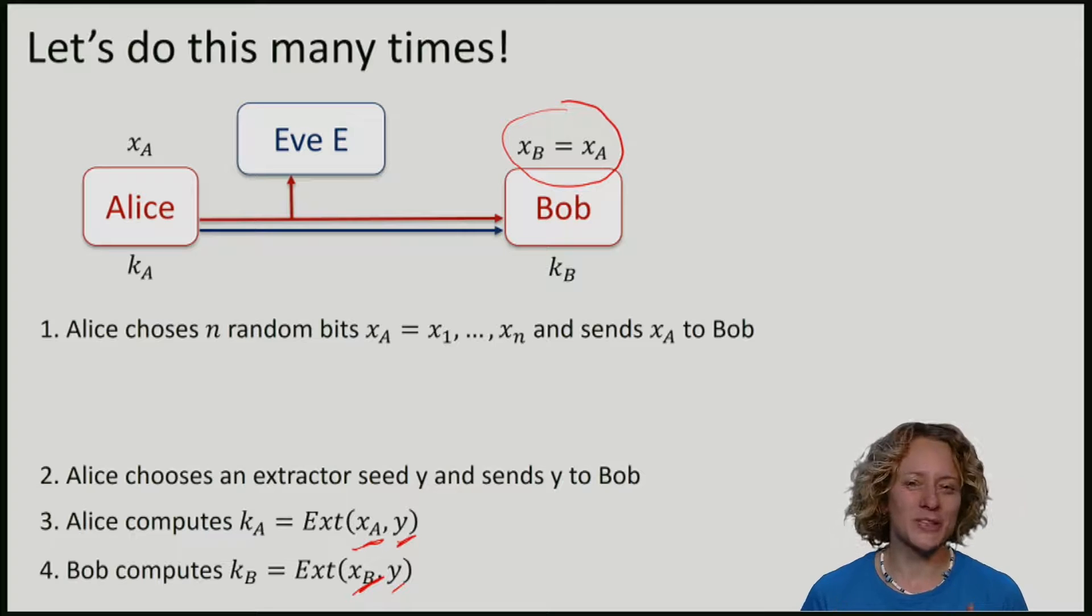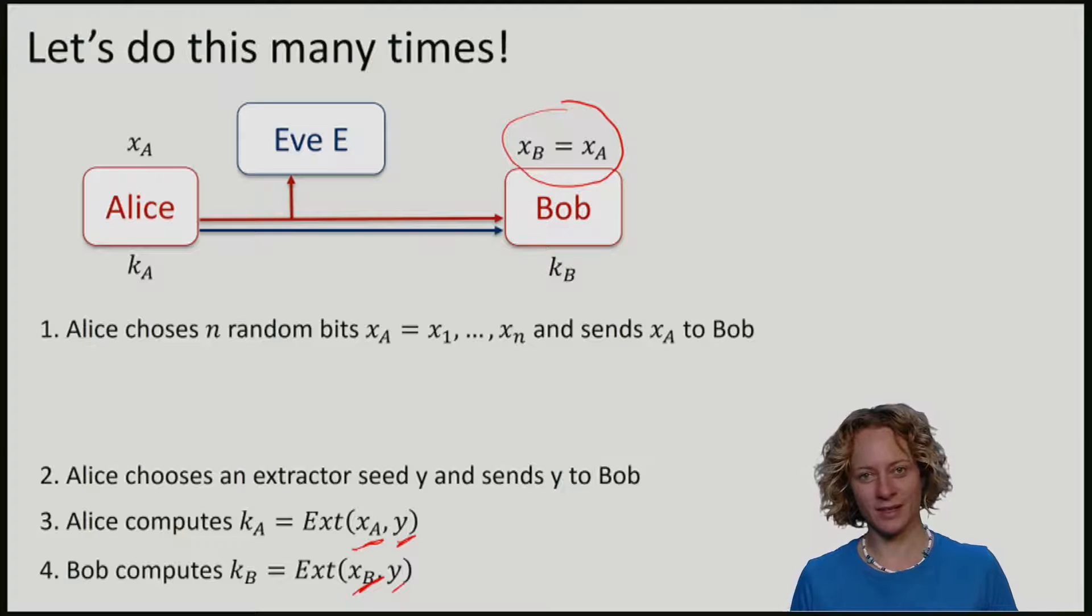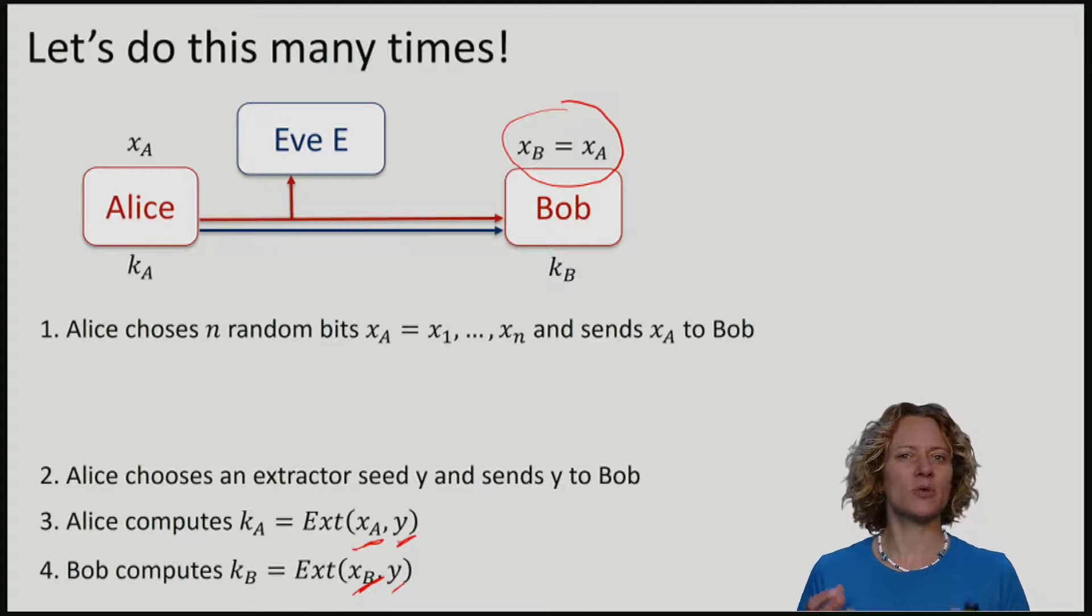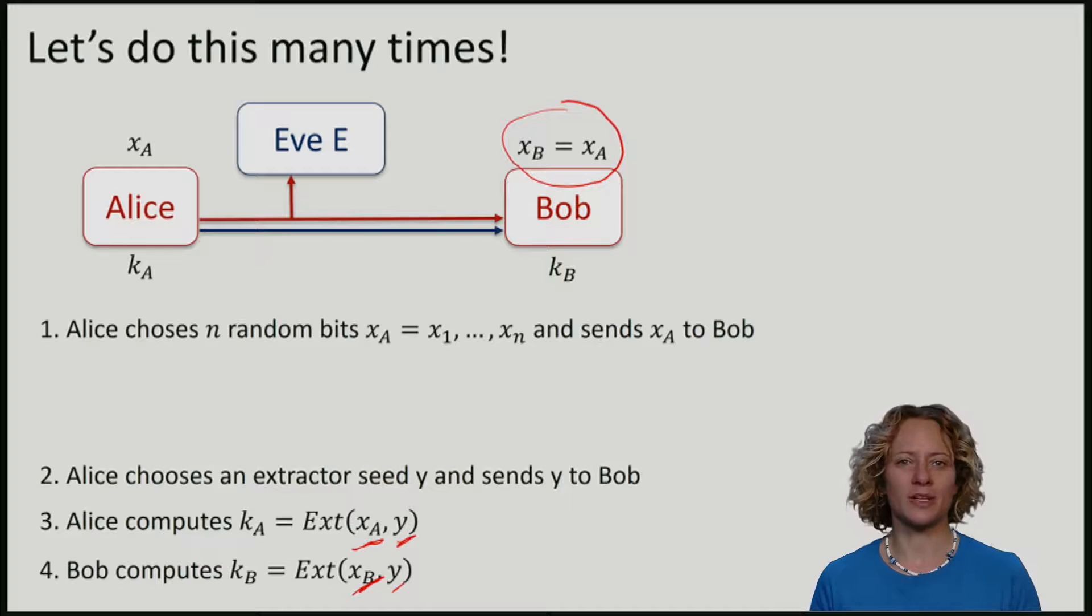So the question is, why would this be a key distribution protocol? Remember that there are always two things we need to check. We need to check that the protocol is correct, and we need to check the protocol is secure. Let's start with correctness.